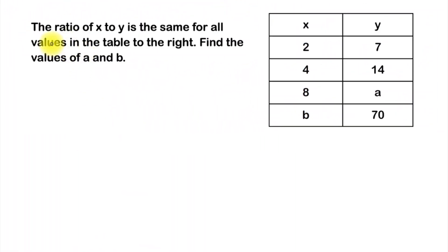This question says the ratio of x to y is the same for all values in the table to the right. That's just talking about this table here. Find the values of a and b. So we've got this ratio table and one column is labeled as x and one column is labeled as y.